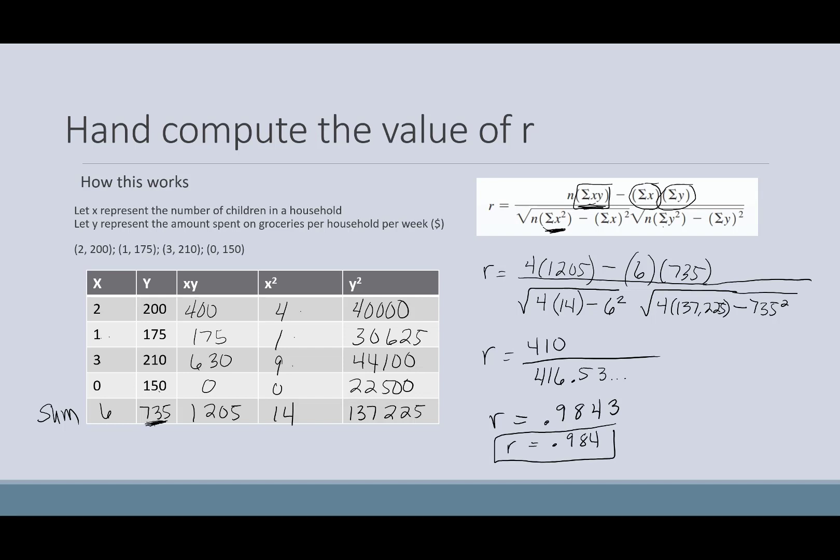So when you go to your table, it's going to have a column that categorizes them by n, and most of them will have a significance level. So depending on your significance level will determine which of your critical values you would be using. The n, again, comes from how many data pairs do we have?